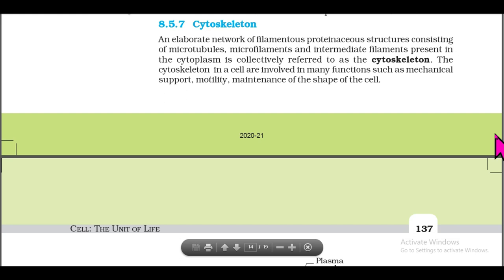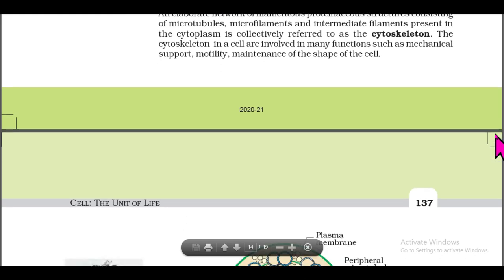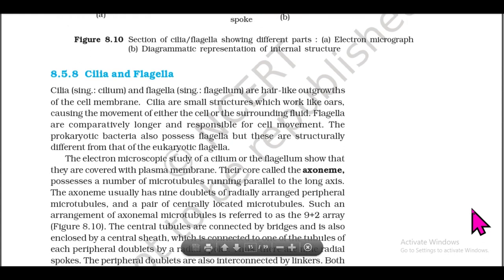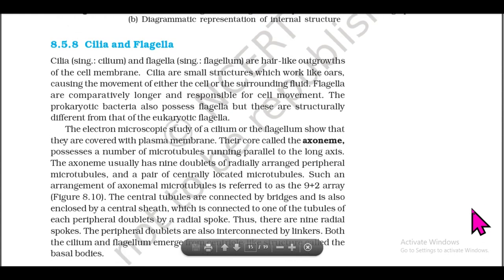Section 8.5.7: Cytoskeleton. An elaborate network of filamentous proteinaceous structures consisting of microtubules, microfilaments, and intermediate filaments present in the cytoplasm is collectively referred to as the cytoskeleton. The cytoskeleton in a cell is involved in many functions such as mechanical support, motility, and maintenance of the shape of the cell.